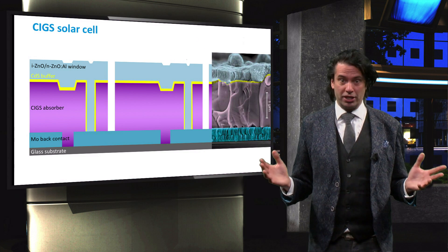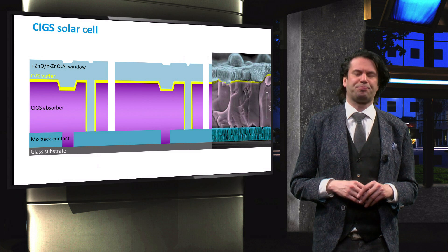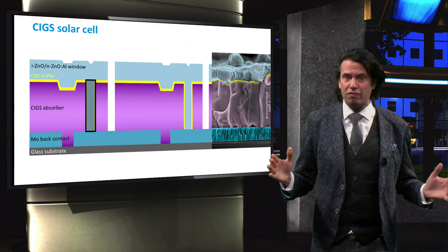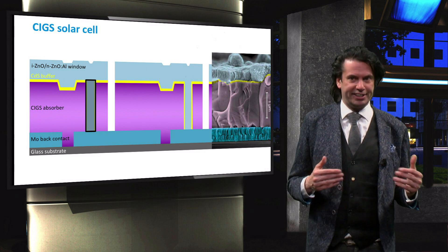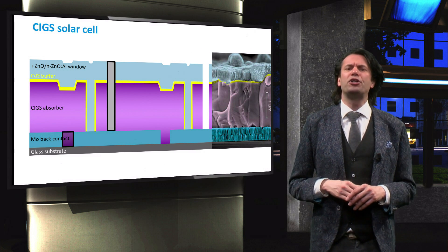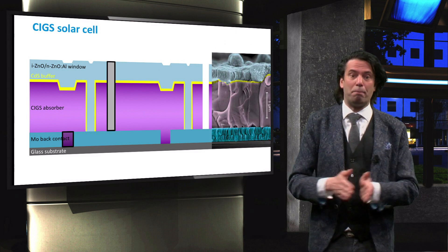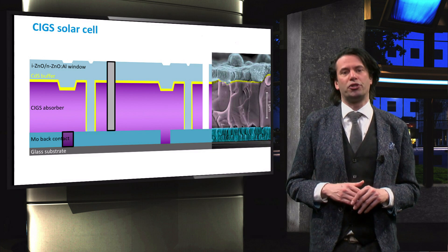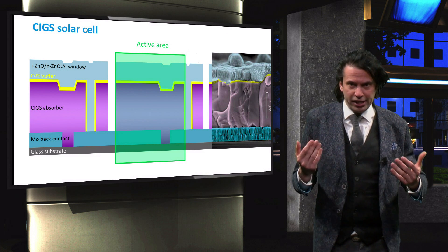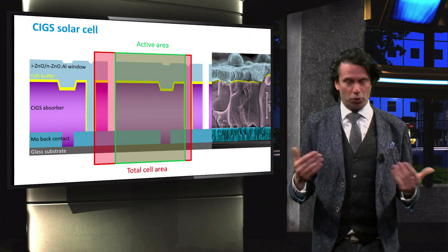After the P3 laser scribe, the front TCO electrode is connected with the molybdenum back contact of the next solar cell. The performance of such an interconnect established via laser scribes, and hence the total module performance, is determined by several things. First, the P2 scribe must be highly conductive — it has to be wide enough and there should be no barrier at the interface between the front contact and the metal back contact. The P1 and P3 scribes, on the other hand, must form good barriers to effectively separate the cells. Finally, the region between the P1 and P3 scribes does not contribute to the current generated by the module, so this area subtracts from the active area. The active area with respect to the total area should be as large as possible in order to maximize PV module performance.